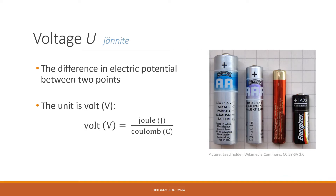Voltage is electric potential energy per unit charge, measured in volts. One volt is the potential difference between two points that will impart one joule of energy per Coulomb of charge that passes through it. A large potential difference corresponds to a strong tendency for electrons to flow.